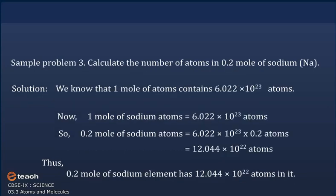Problem 3: Calculate the number of atoms in 0.2 mole of sodium (Na). Solution: we know that 1 mole of atoms contains 6.022×10²³ atoms. So 1 mole of sodium atoms = 6.022×10²³ atoms. Therefore, 0.2 mole of sodium atoms = 6.022×10²³ × 0.2 = 12.044×10²² atoms. Thus, 0.2 mole of sodium element has 12.044×10²² atoms.